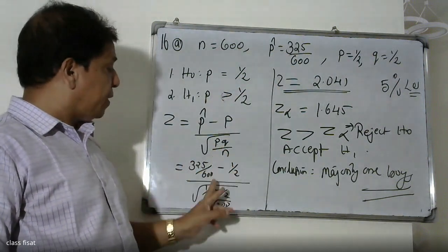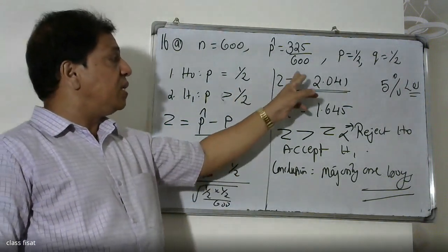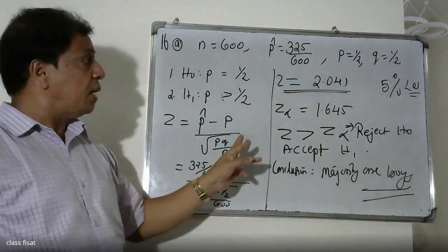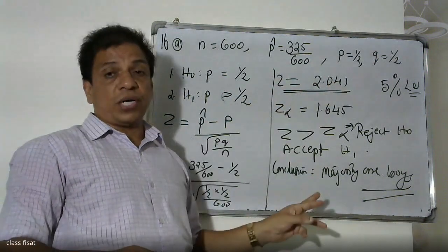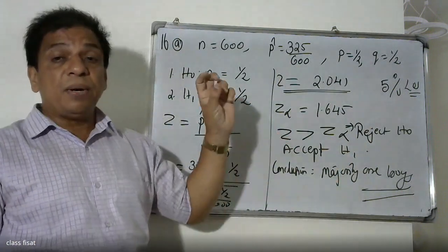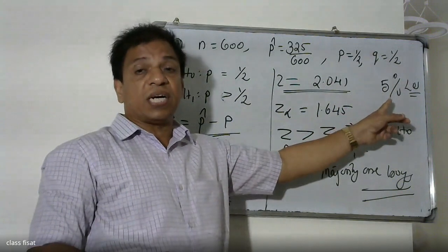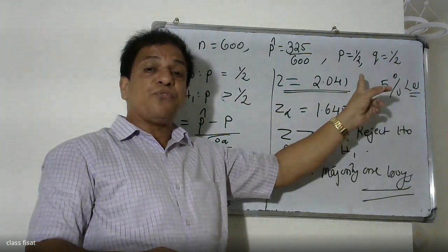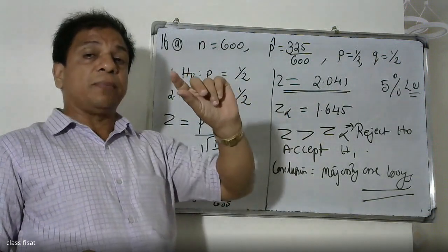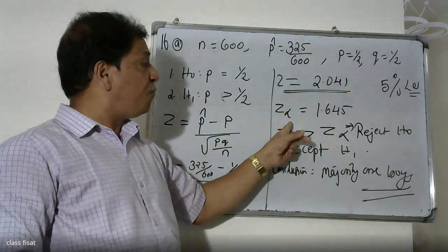To summarize: the calculated z-value is 2.041, and the table value at the 5% level of significance gives a critical value of 1.645. Since 2.041 exceeds 1.645, the data supports the conclusion that boys are the majority.